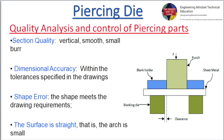Quality analysis and control of piercing parts. Section quality: vertical, smooth, small burr. Dimensional accuracy within the tolerances specified in the drawings. Shape error: the shape meets the drawing requirements; the surface is straight, that is, the arch is small.